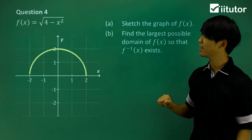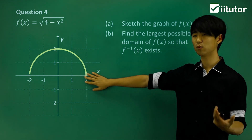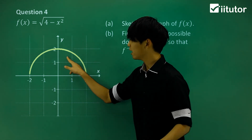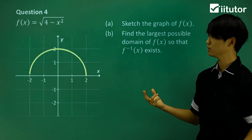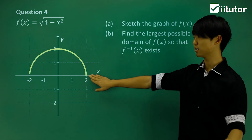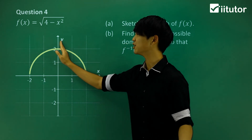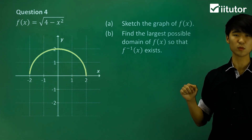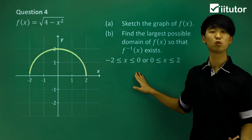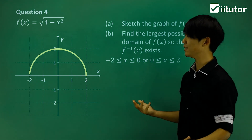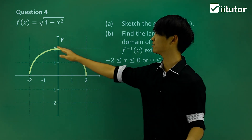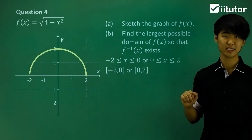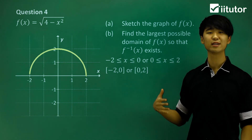In part B, we find the largest possible domain for the inverse to exist. This is currently a many-to-1 function — one y value corresponds to two x values. Similar to the parabola questions, we take only one half of the graph to make it 1-to-1. The answer is either x ∈ [-2, 0] or x ∈ [0, 2]. That concludes our questions regarding inverse functions.